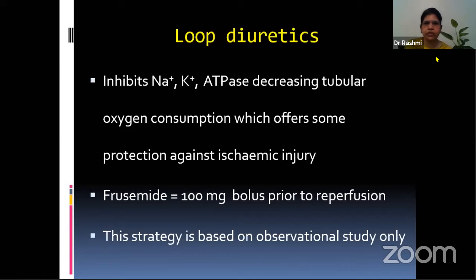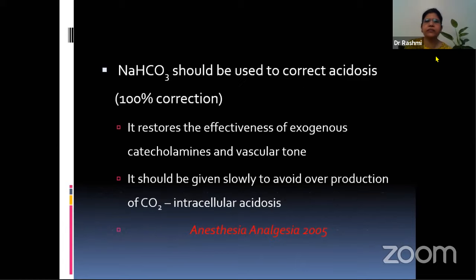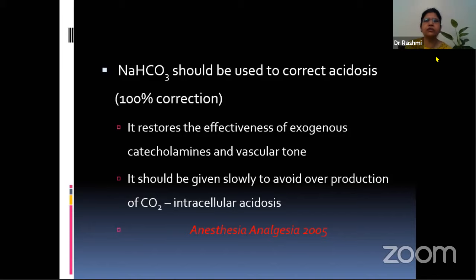The textbook says you can go up to 500 mg, but one has to be careful because there are very serious side effects with furosemide. We have got good results with the 100 mg bolus dose. This strategy is, however, based only on observational study. Sodium bicarbonate is very useful to correct acidosis. We do 100% correction, as it restores the effectiveness of exogenous catecholamines and vascular tone. It should be given slowly to avoid overproduction of CO2, which causes intracellular acidosis.